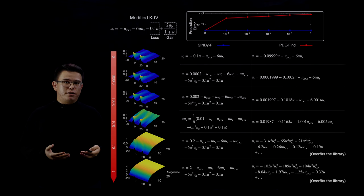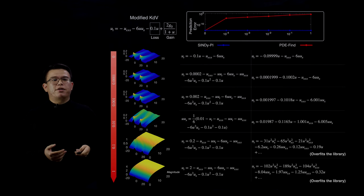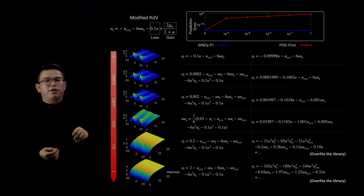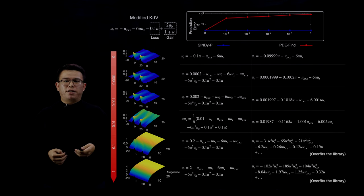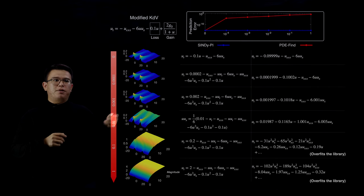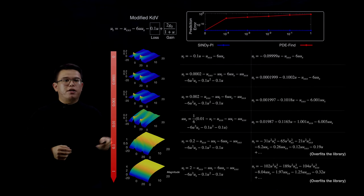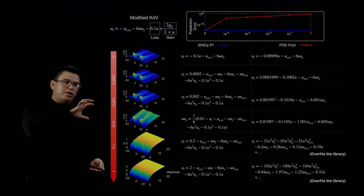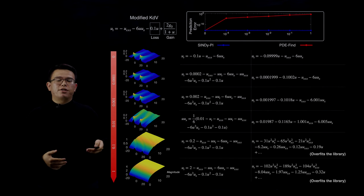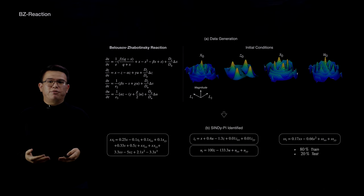With improved noise robustness and data efficiency, we can now tackle rational PDE equations. We compare the performance of CINDY-PI and PDE-FIND on a modified KdV equation that has a rational term 2*g0 divided by (1 plus u). As g0 increases, the rational term plays an increasingly important role. When g0 is zero there is no rational dynamics and both methods find the correct equations. As g0 grows, PDE-FIND starts adding constant terms and tuning parameters to compensate for the rational dynamics, and at large g0 it overfits the library and fails. In contrast, CINDY-PI selects the correct model at all levels of g0.